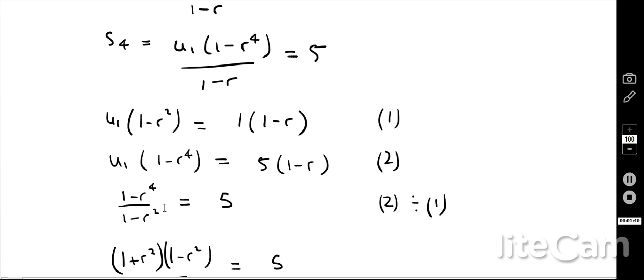So I now have an equation just in terms of r. So there you go, 1 minus r to the power of 4 over 1 minus r squared is equal to 5.